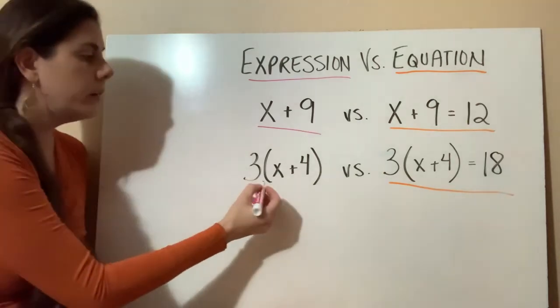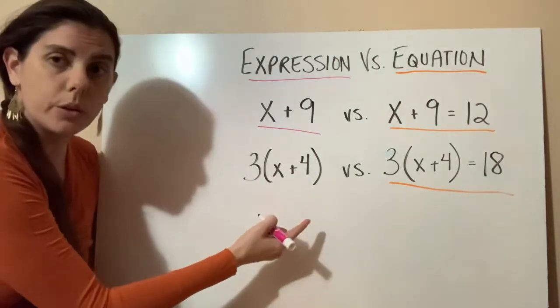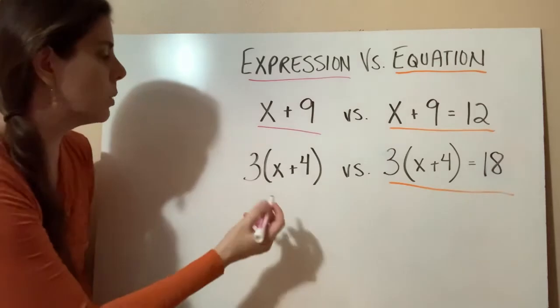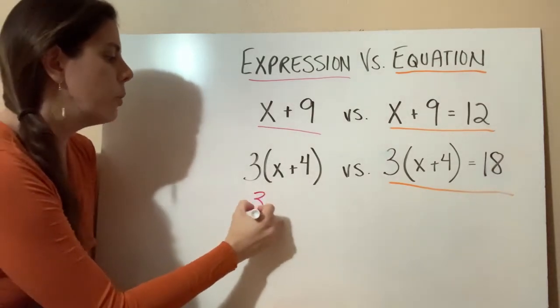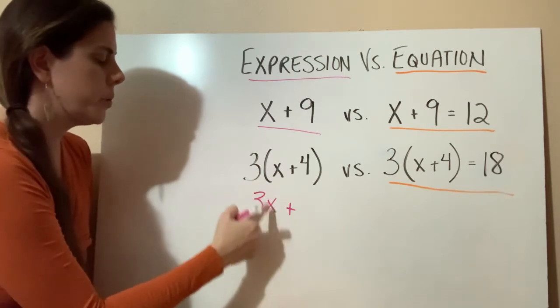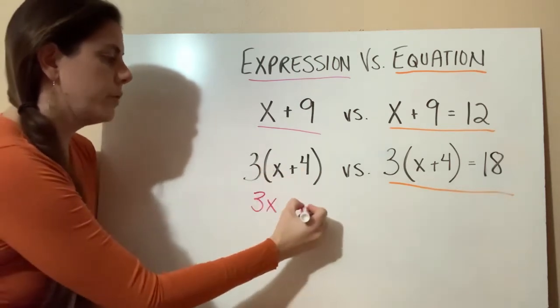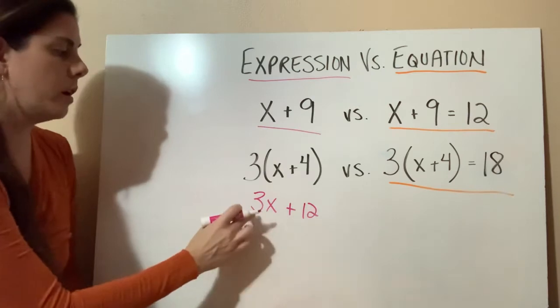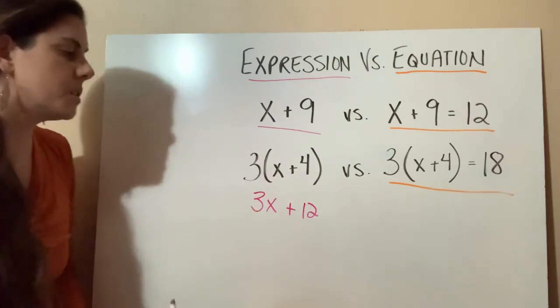And so we could expand this out using distribution, which is something else that we'll learn later on. And we could rewrite this as 3x, so 3 times x is 3x, and then 3 times 4 equals 12. So we could rewrite this as 3x plus 12.